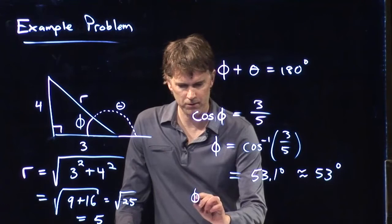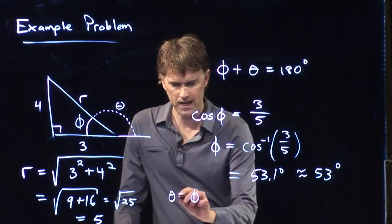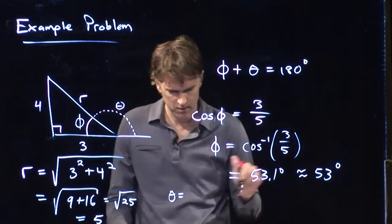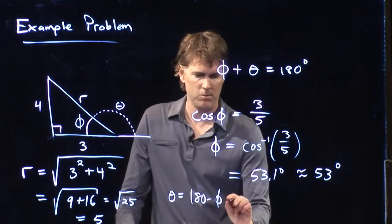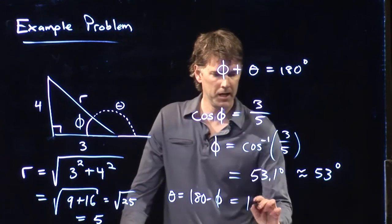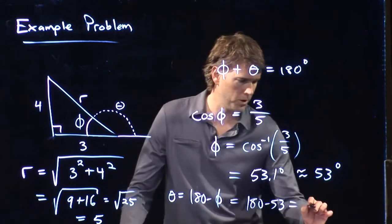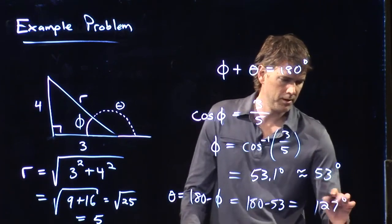Theta is, of course, 180 minus that phi. 180 minus phi is 180 minus 53, and we get 127 degrees.